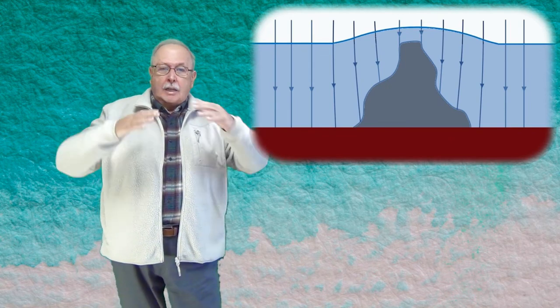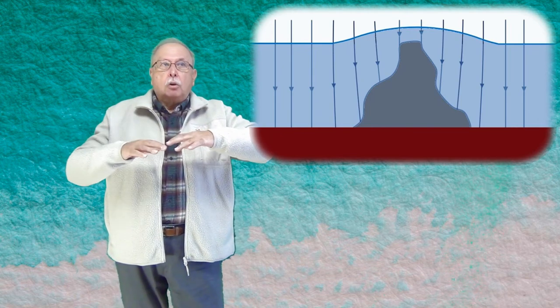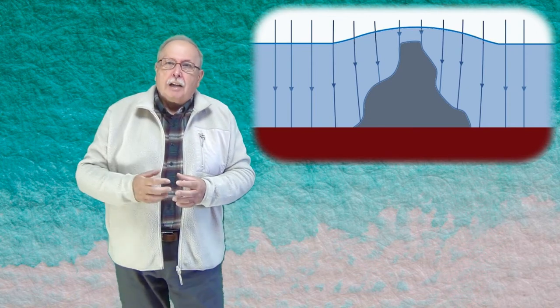Pentru că altfel, dacă ar rămâne plană, sau dacă, din potrivă, ar căpăta o adâncitură acolo, liniile câmpului gravitațional n-ar mai fi normale la suprafață apei, apa n-ar mai fi în echilibru.